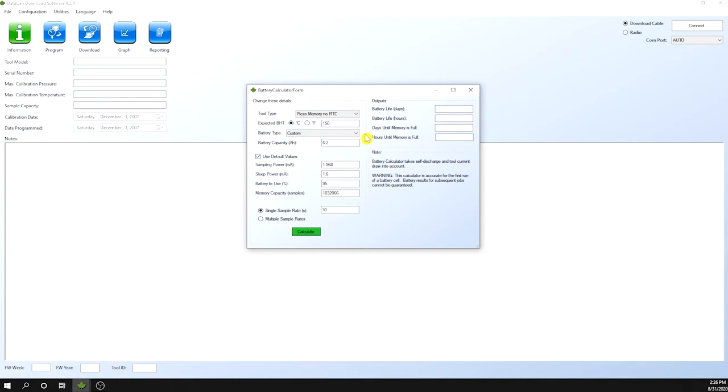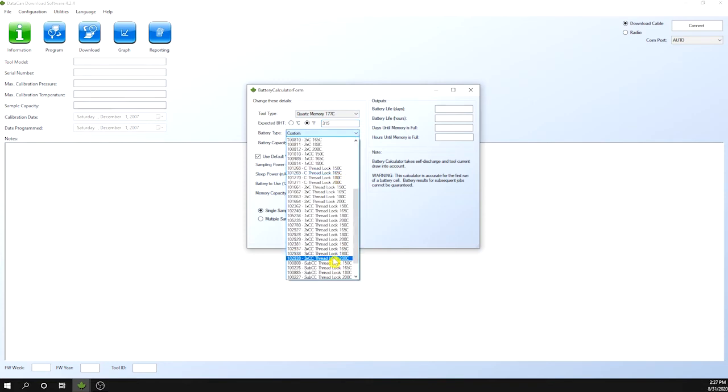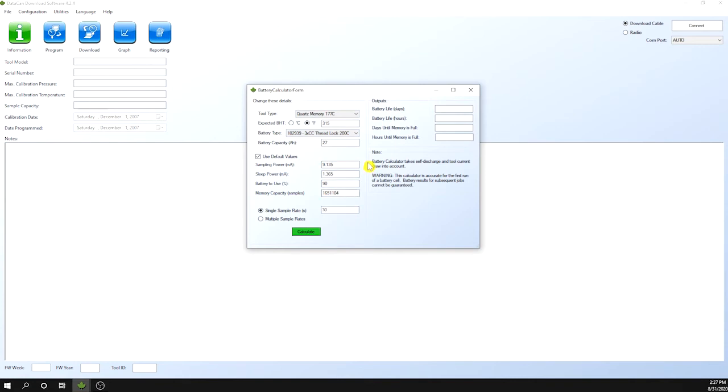Select the tool type. Enter the expected bottom hole temperature. Select the battery type. Enter the sample rate and press calculate.